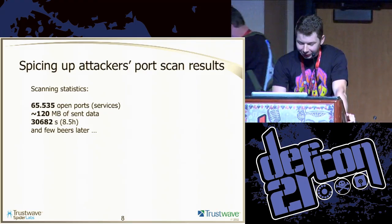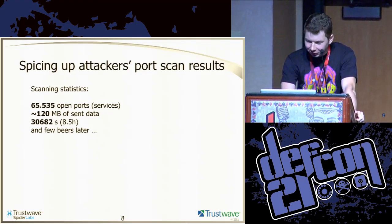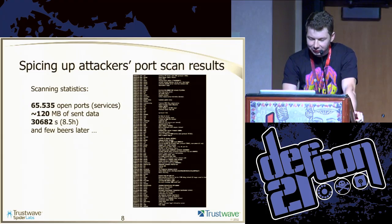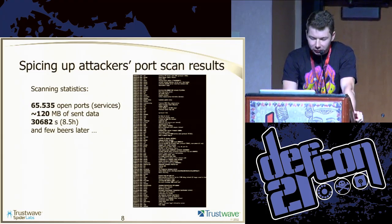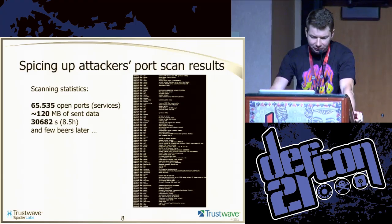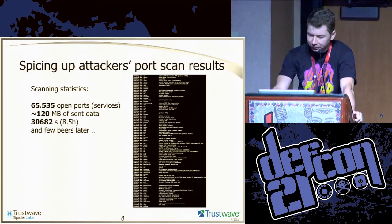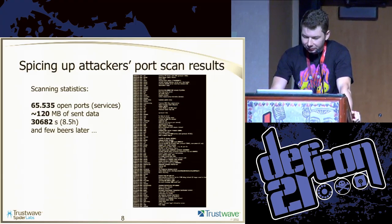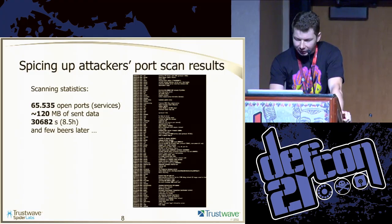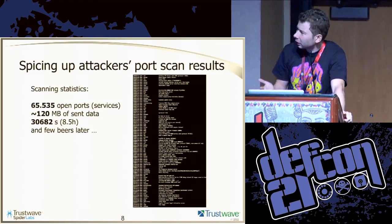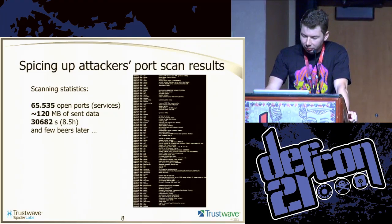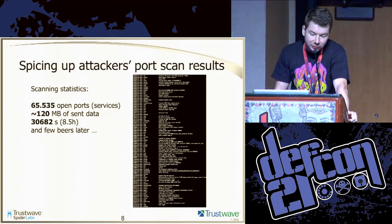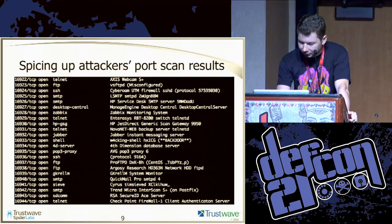Coming back — our attackers get a nice, juicy output: 65,000 or more valid services identified by NMAP. Of course, I focus on NMAP, but it can be any other port scanner. Since it's so popular, why not?